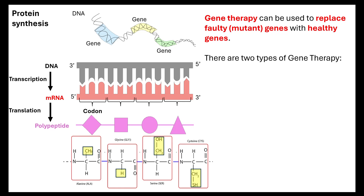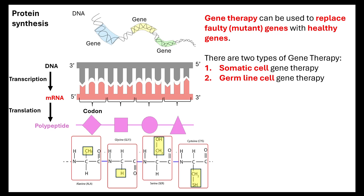There are two types of gene therapy that can be done. One is known as somatic cell gene therapy, and the other is germline cell gene therapy. Let's look at the difference between the two.